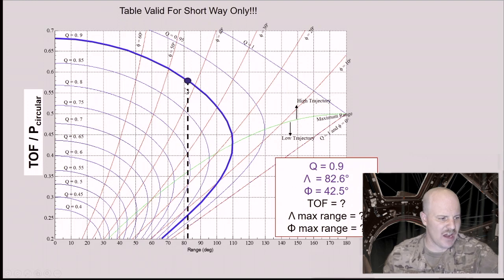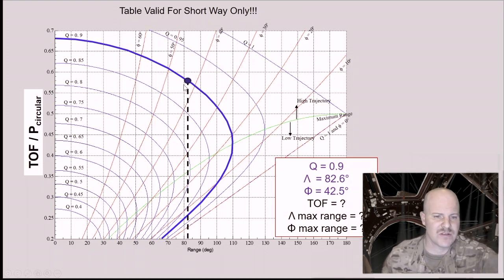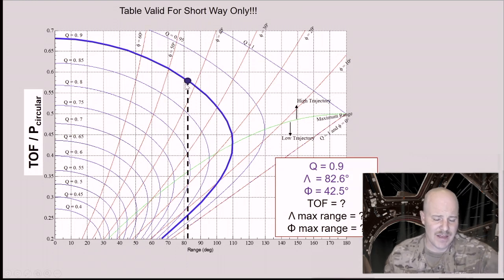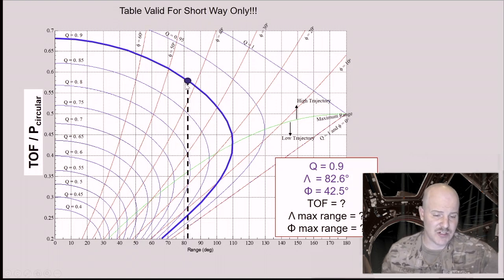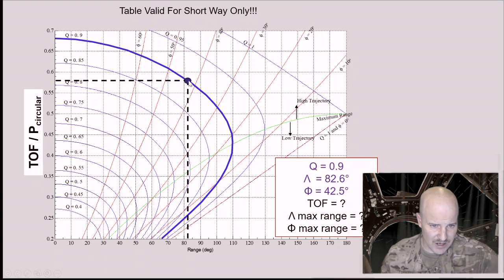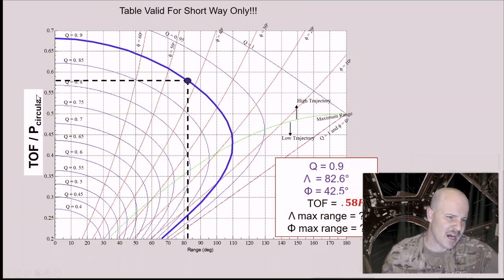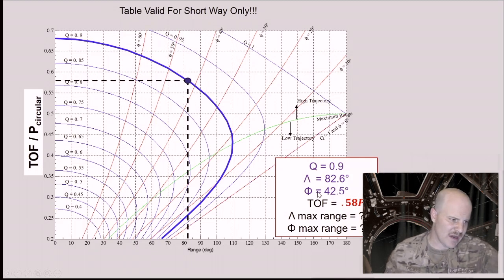How do I use this chart to calculate time of flight? Using the same problem — Q of 0.9, range angle of 82.6 degrees, flight path angle of 42.5 degrees — I'm at the same intersection point. Drawing a line straight across to the TOF over P circular ratio on the side, I find approximately 0.58 of P circular. For right now, you would write down 0.58 P circ.